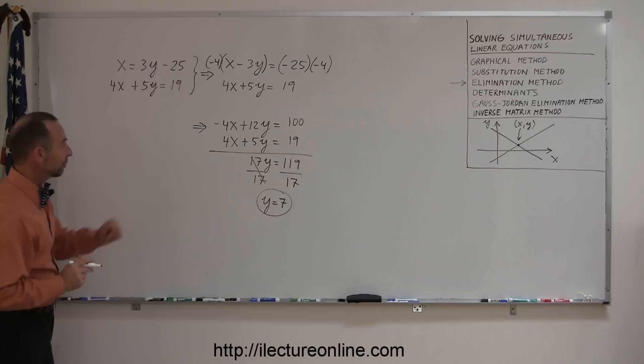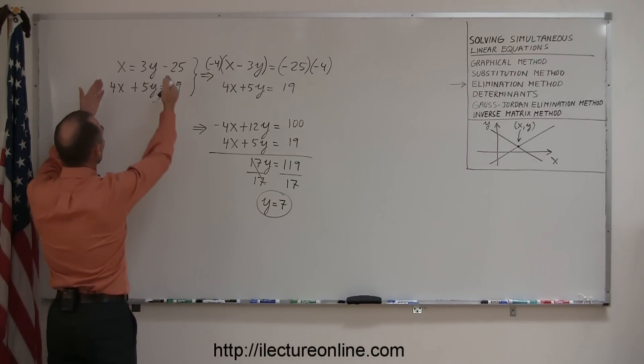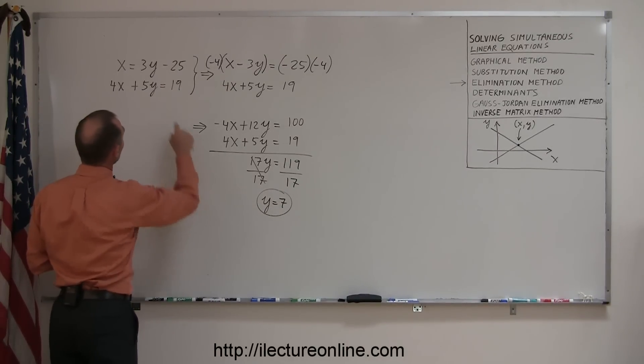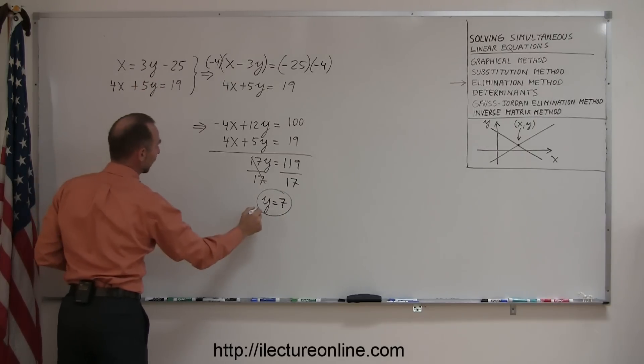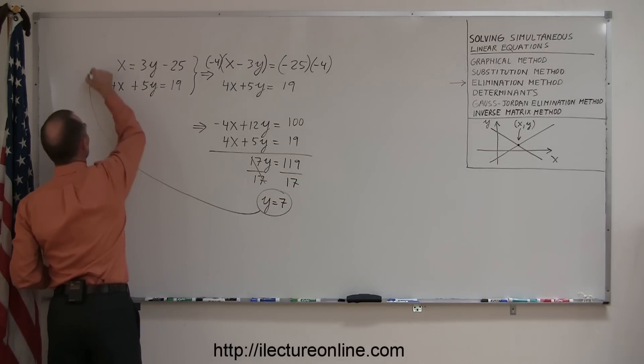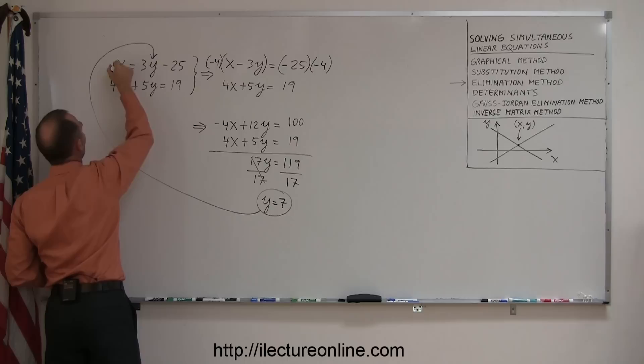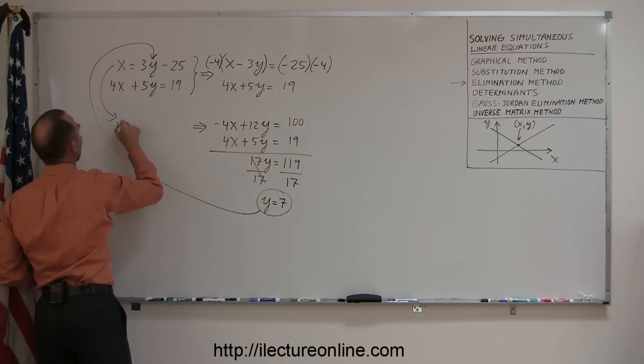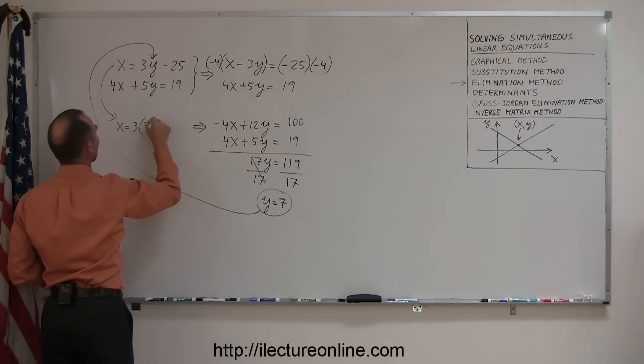I can now take that value for y and plug it back into either one of my two equations. And probably the best equation is the top equation, because it's already solved in terms of x and y. So plug that in here, like so. And then this equation becomes x equals three times, instead of y I write what y is equal to, 7 minus 25, or x is equal to 21 minus 25, or x is equal to minus 4.